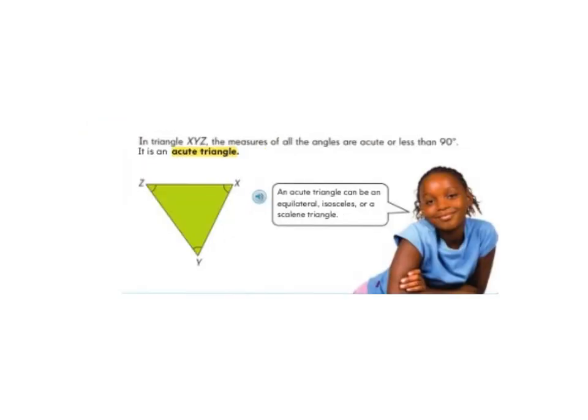The third type of triangle that we can classify according to angles is called an acute triangle. And in an acute triangle, all the angles in the triangle are acute angles, which means that they are all less than 90 degrees. So in triangle XYZ, the measures of all three angles are going to be less than 90 degrees.